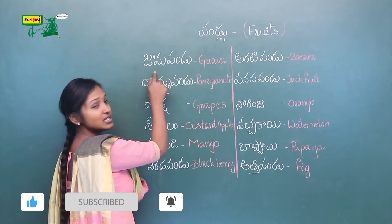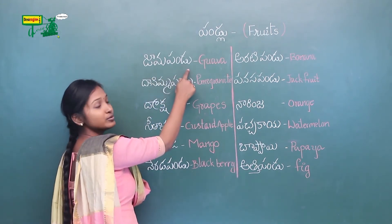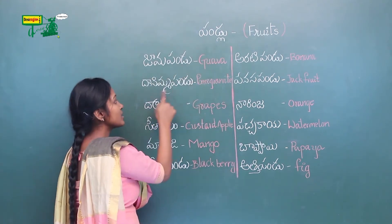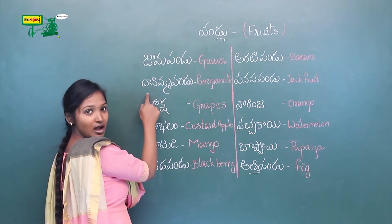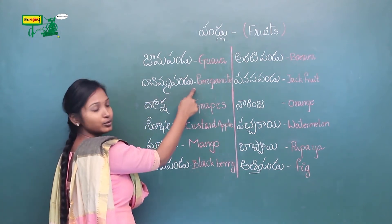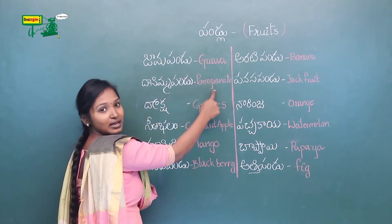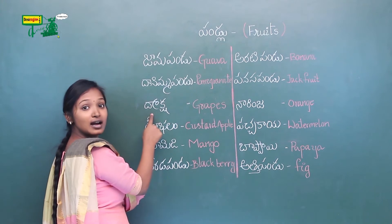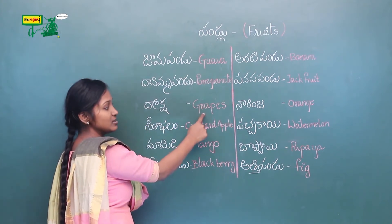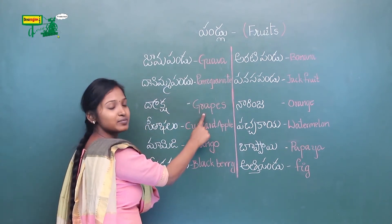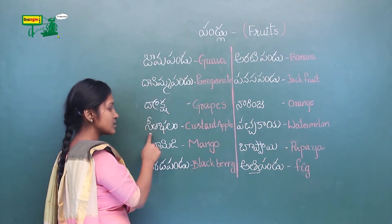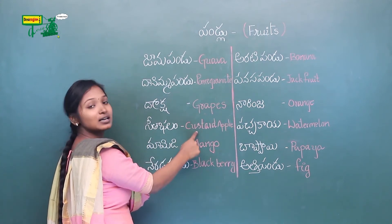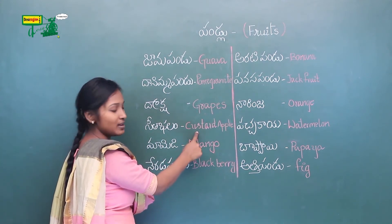Jama Pandu means Guava. Dhanimma Pandu means Pomegranate. Draksha means Grapes. Sita falam means Custard apple.